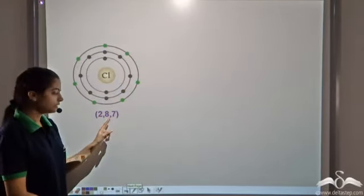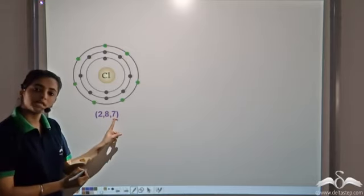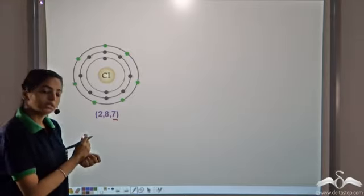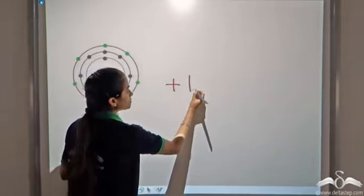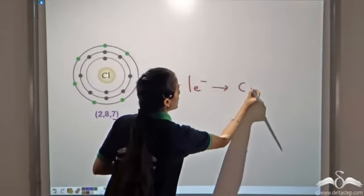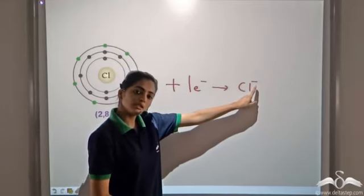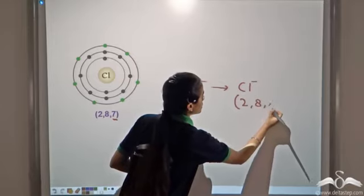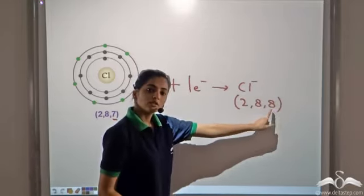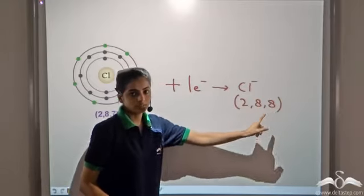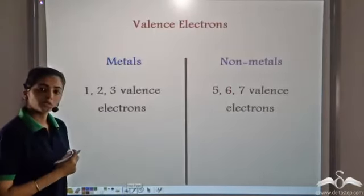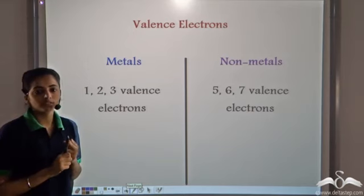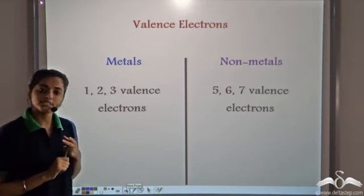Similarly, for non-metals — chlorine has an electronic configuration of 2, 8, 7. In order to satisfy the octet rule, it has to gain one electron. It gains one electron to become Cl⁻, and its electronic configuration becomes 2, 8, 8. So the outermost shell now has 8 electrons. So metals are those elements which have 1, 2, or 3 valence electrons, and non-metals are those which have 5, 6, or 7 valence electrons.